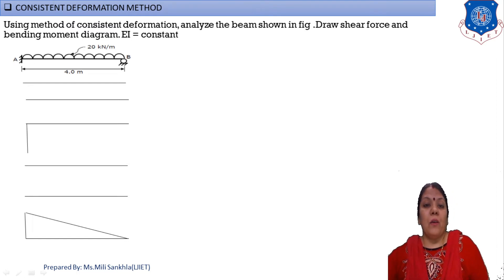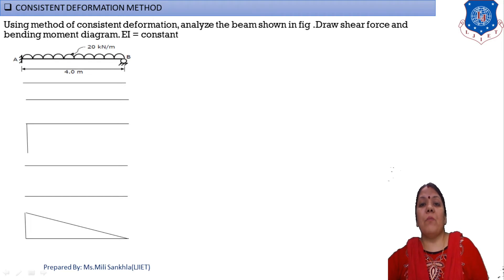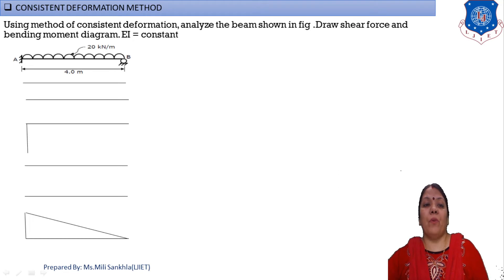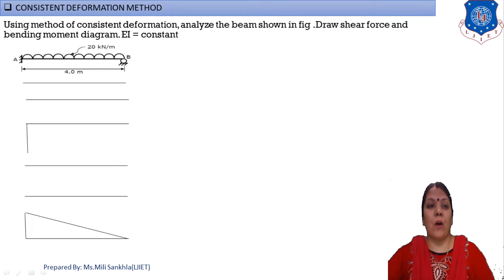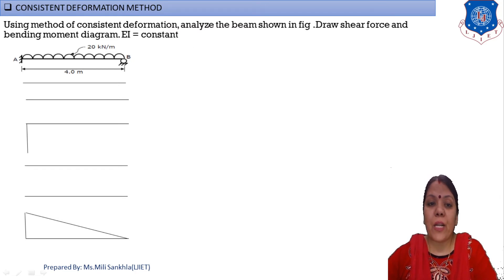Before starting the example, understand the given data. Using the method of consistent deformation, analyse the beam shown in the figure and draw the shear force and bending moment diagrams. Here EI is constant. Now follow the steps of the consistent deformation method one by one. First, find out the static indeterminacy (SI).